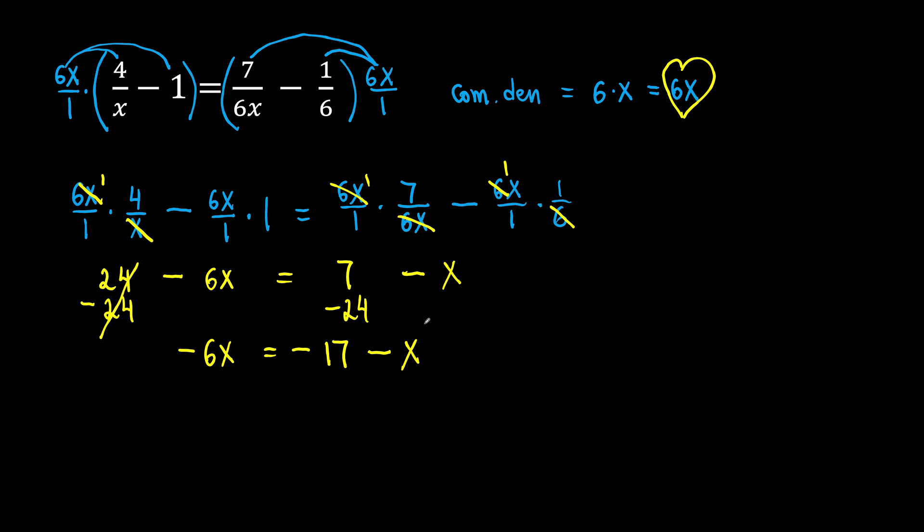What do we do next? We need to bring this negative x to the left side. You can just take negative x and bring it to the left side as plus x, or you add x to both sides. So negative x plus x will go away. On the left, we have negative 6x plus x will be negative 5x. And on the right, we will be left with negative 17.